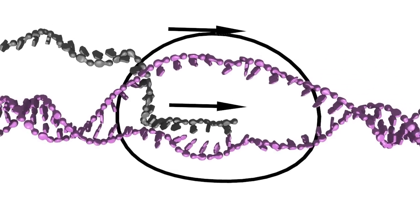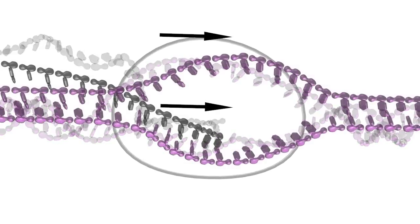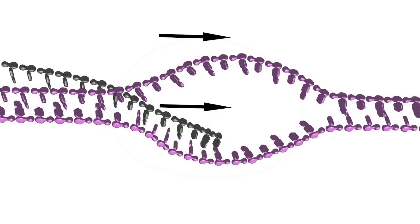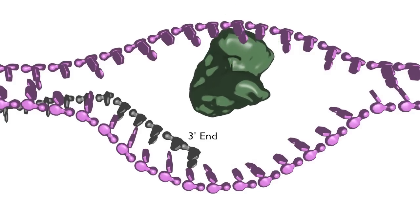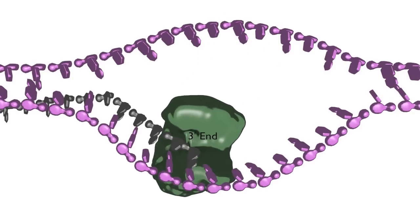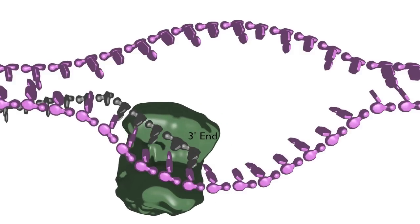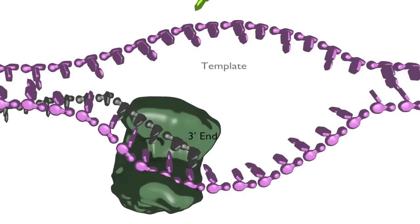This loop structure, together with the invading strand, is called a displacement loop, or D-loop. The 3' end of the invading strand then acts as a primer for DNA synthesis, and the complementary duplex strand serves as the template.